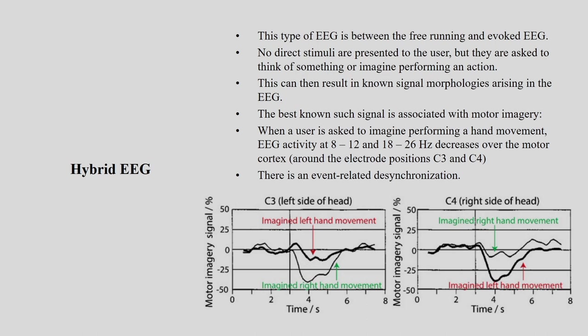The third type is hybrid EEG. Hybrid means it is a combination — between free running and evoked EEG. No direct stimuli are presented to the user, but they are asked to think of something or imagine performing something. Since there is no direct stimulus it is not purely free running, and since the user imagines a stimulus it is not fully evoked — hence it is hybrid.